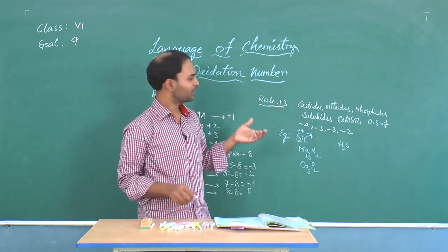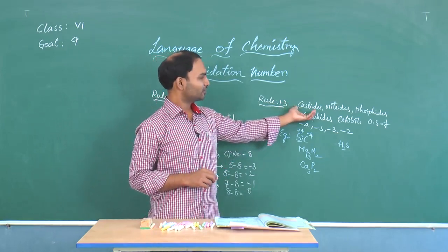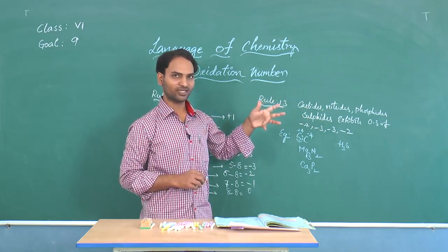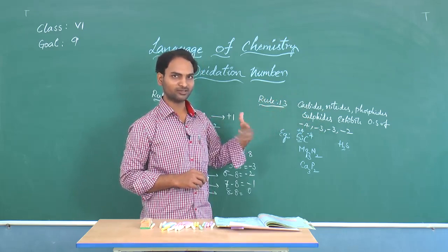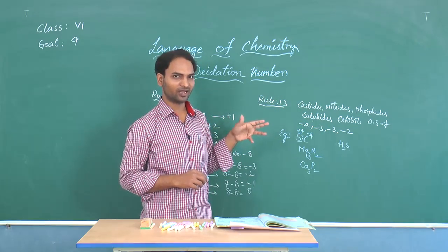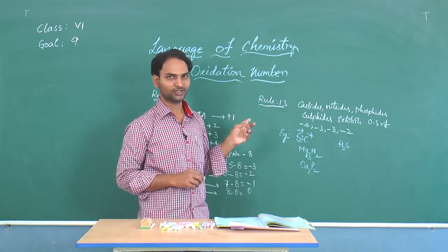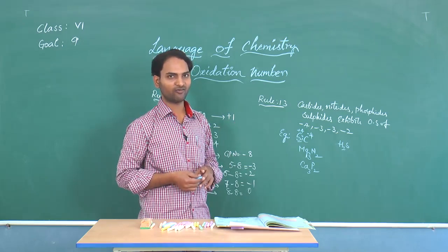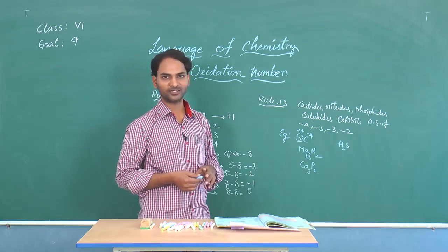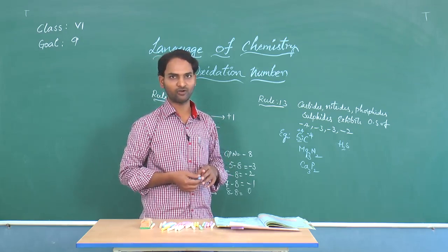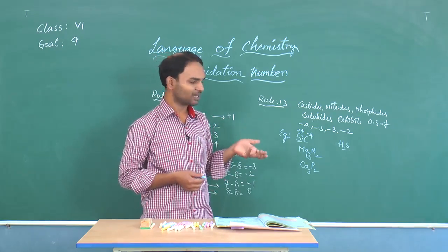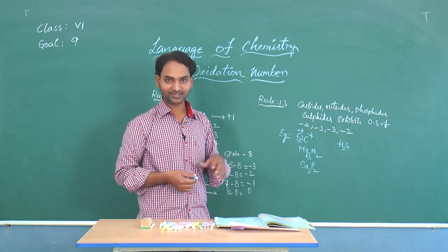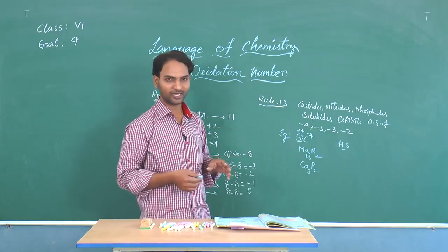To summarize rule 13: in compounds, carbides exhibit minus 4 oxidation state, nitrides exhibit minus 3, phosphides exhibit minus 3, and sulfides exhibit minus 2 oxidation state.